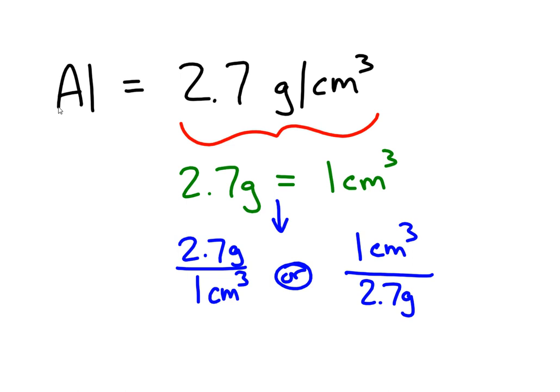So for example, we'll stick with our aluminum. If I had 33.0 grams of aluminum, I want to know how many cubic centimeters is going to be taken up, the volume of 33.0 grams of aluminum.